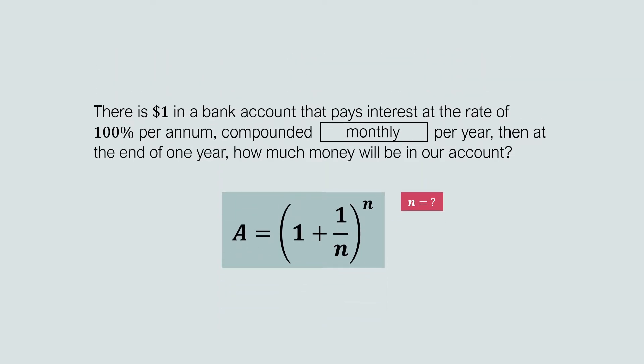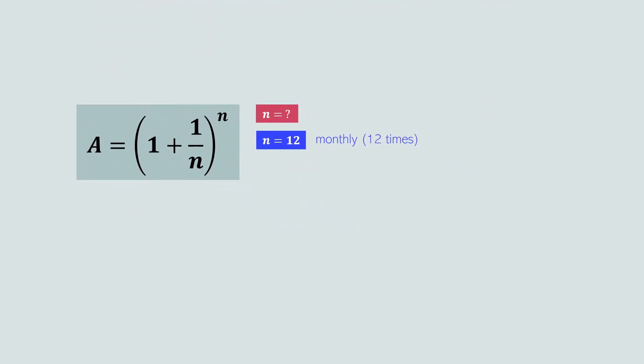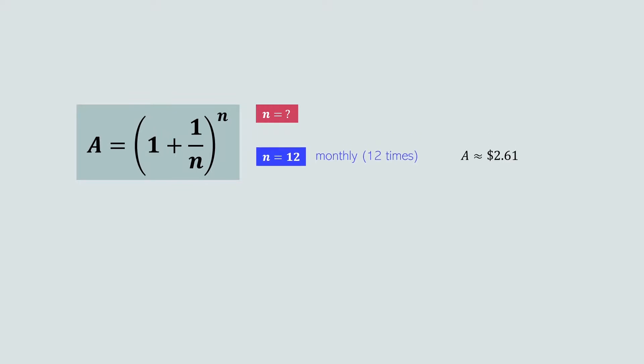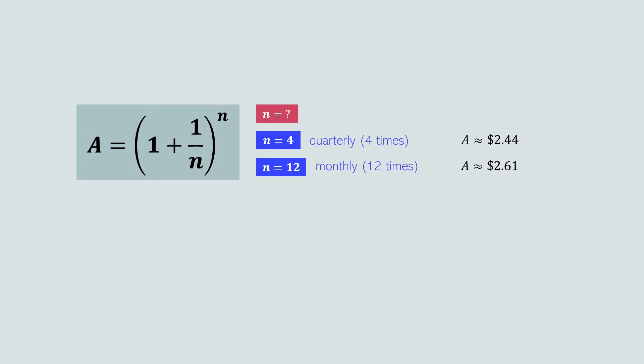Going back to our question: if interest is compounded monthly, that means it is compounded 12 times per year, so N equals 12. At the end of one year, the final account balance will be $2.61. Adding our earlier result to the table: when N equals 4, A equals $2.44.